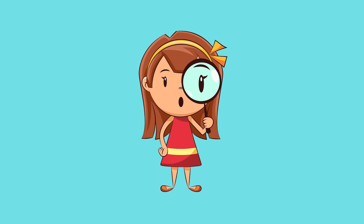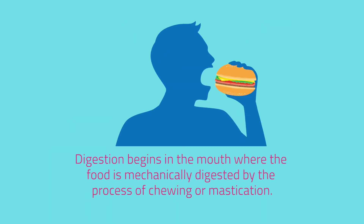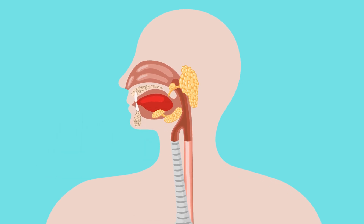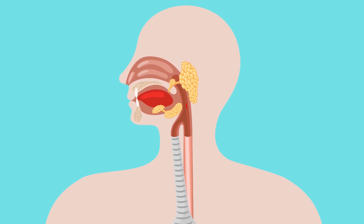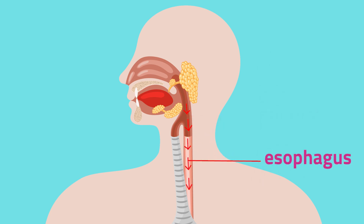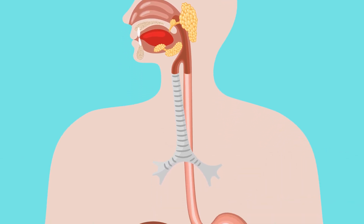How does it happen? Digestion begins in the mouth, where the food is mechanically digested by the process of chewing, or mastication. As the food is being chewed, saliva is released by the salivary glands, moistening the food for easy swallowing. The chewed food, referred to as bolus, passes through the pharynx, then to the esophagus — a long tube that connects the mouth to the stomach.